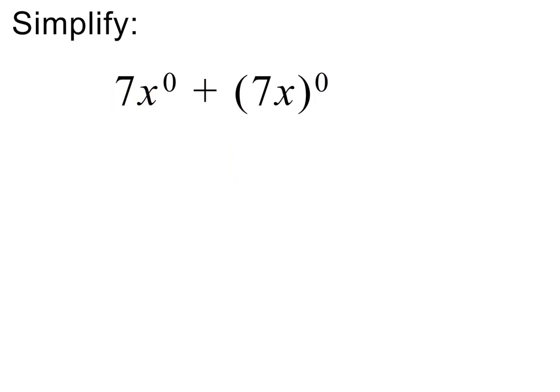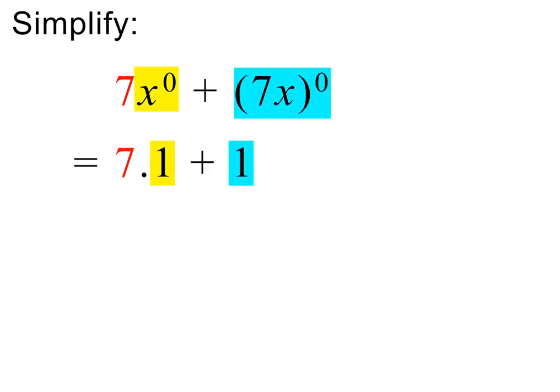Let's end with this example — please pause and try it on your own first. The first 0 exponent only applies to x, so x is the base and x to the power of 0 is equal to 1. We also need to multiply by the 7 in front — here I use a dot to show multiplication. The second term is equal to 1 because the whole of 7x is the base. We then multiply 7 by 1 to get 7, and then we add to get the final answer. This completes the lesson.